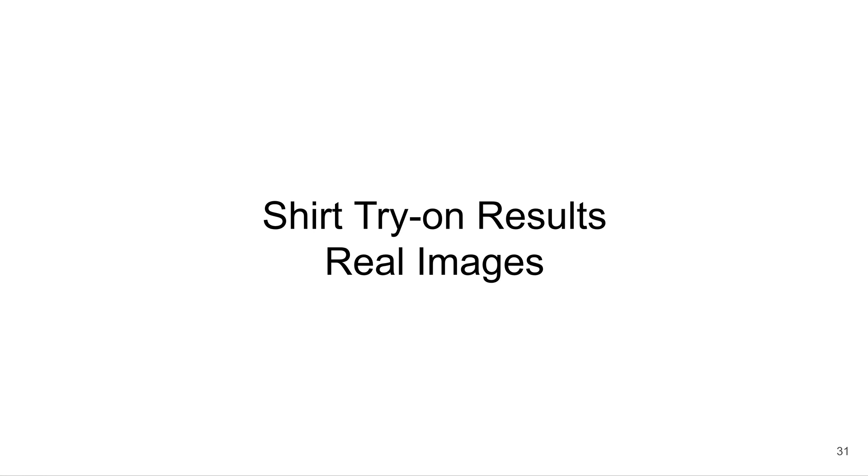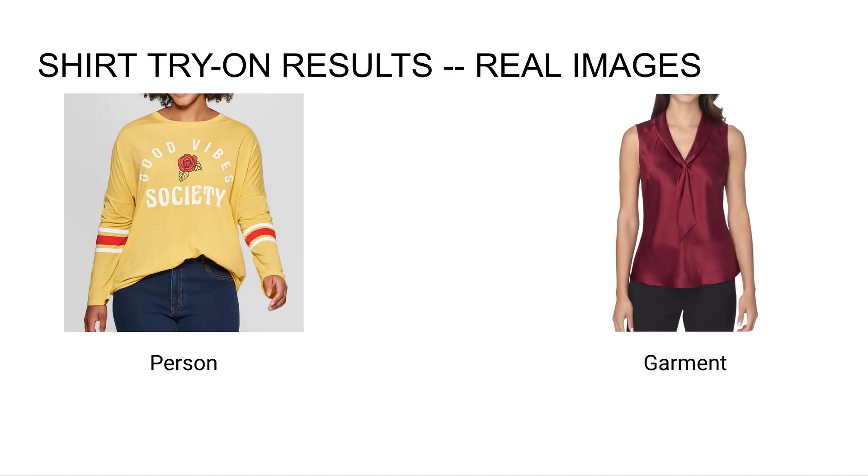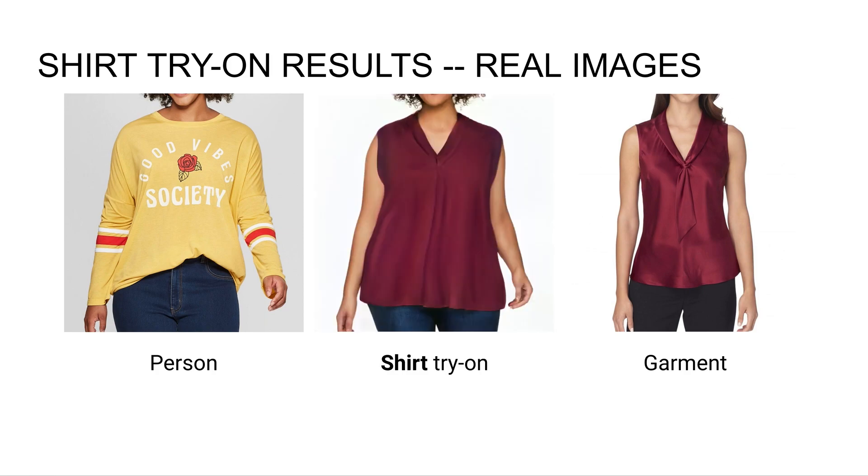I'll show results on real images as well. This will require an extra step where we first have to project the real images into the latent space to get a latent representation for both the person and the garment images. Here again, the left person will be trying on the red shirt from the right image. You can see we're able to change the neckline, synthesize skin on the arms and neck consistent with identity. We're able to capture the shape and color of the shirt while maintaining her hairstyle and jeans.